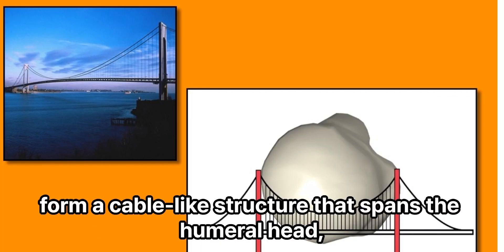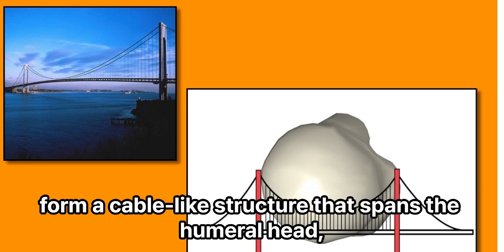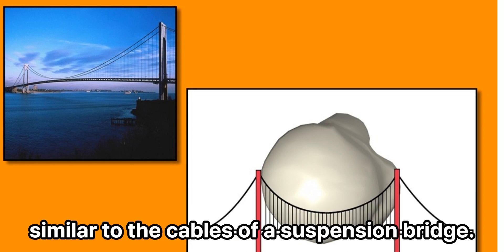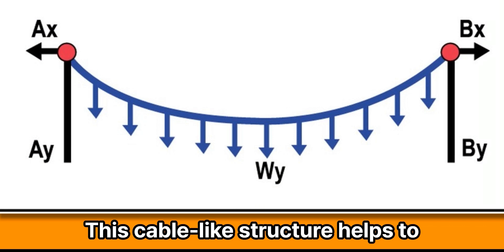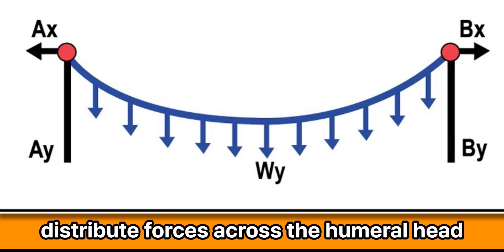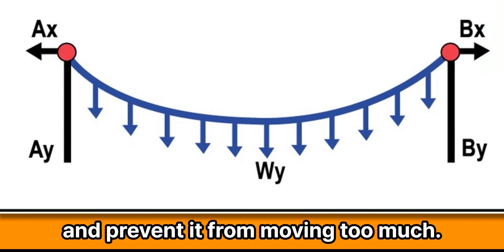The tendons of the rotator cuff form a cable-like structure that spans the humeral head, similar to the cables of a suspension bridge. This cable-like structure helps to distribute forces across the humeral head and prevents it from moving too much.